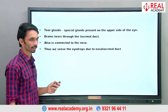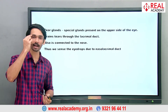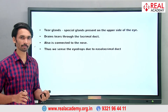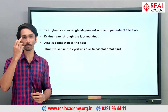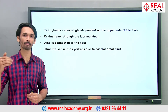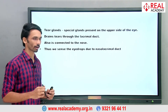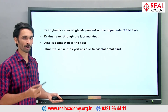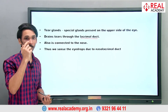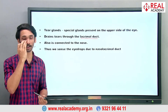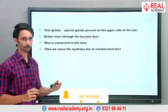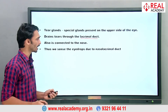Tear glands are present at the upper side of your eye and produce tears. We don't know exactly why we cry, but we do know tears contain a protein that helps keep your eyes free from infection. This protein can break the cell walls of bacteria, preventing them from infecting your eyes. Tears drain through a duct called the lacrimal duct and come out through a tube in that area.